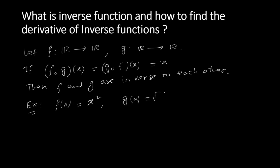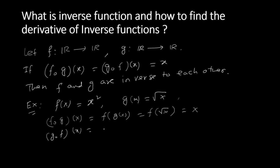For example, if g(x) = √x and f(x) = x², then f∘g(x) = f(√x) = (√x)² = x, and g∘f(x) = g(x²) = √(x²) = x. Therefore, f and g are inverse to each other.